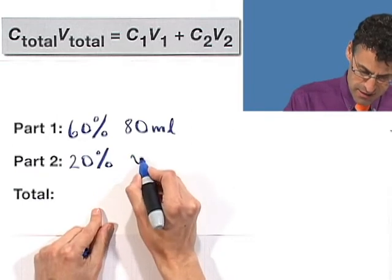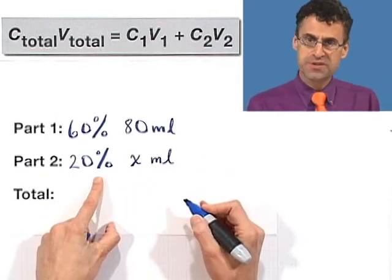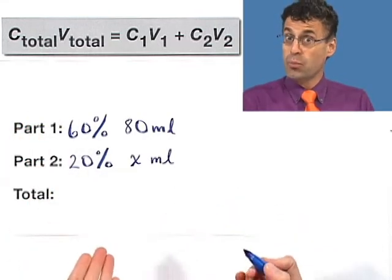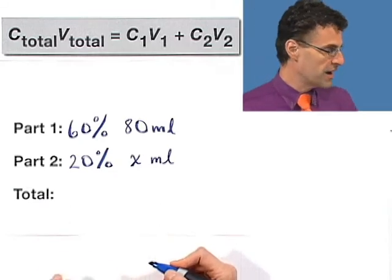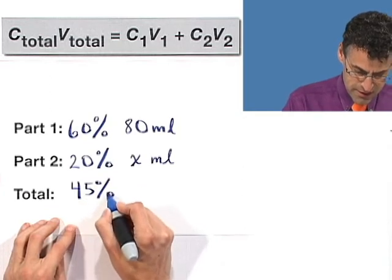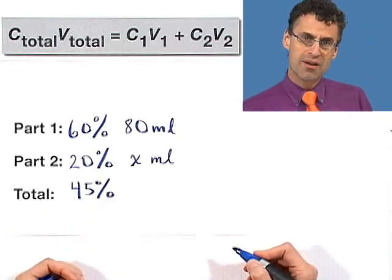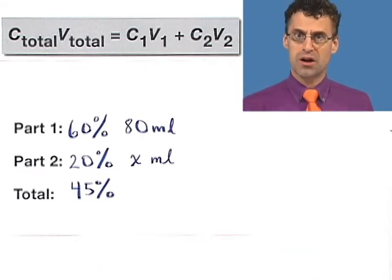So x is going to be the unknown quantity of milliliters of the 20% acid solution that I have to add to this so that what happens? We get a total of 45%. So we want a 45% acid solution. And what will the volume be? How much of that solution will we have? Well, we don't know that.